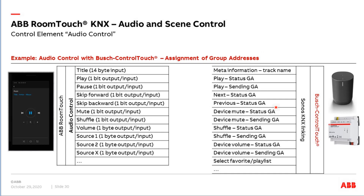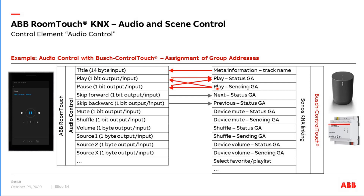Here is the overview for linking group addresses between the RoomTouch and the Bush Control Touch. First, we can link a group address with meta information — the track name displayed in the Control Touch, which is a 14-byte value for title, artist, or album. For playing and pause, we link a group address from play to play status GA as the input, another for pause, and then status back. For skip forward we need one group address ('next'), and another for skip backward ('previous').